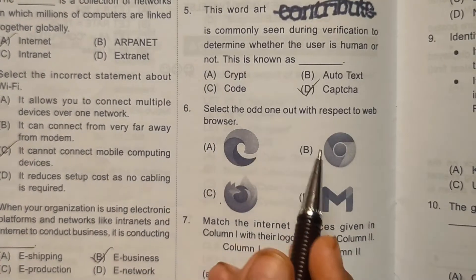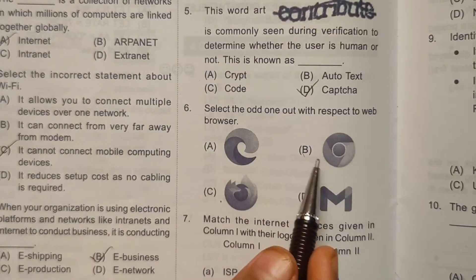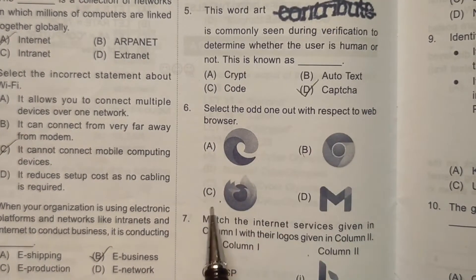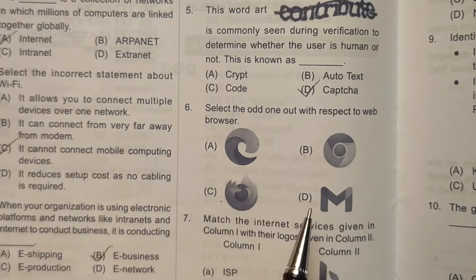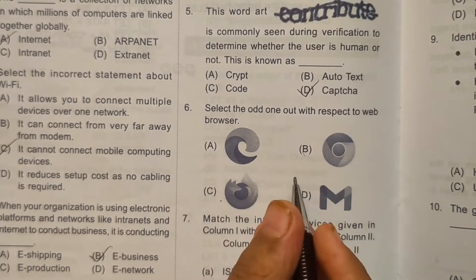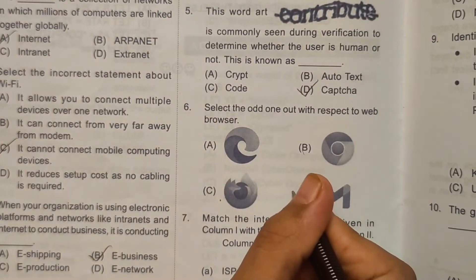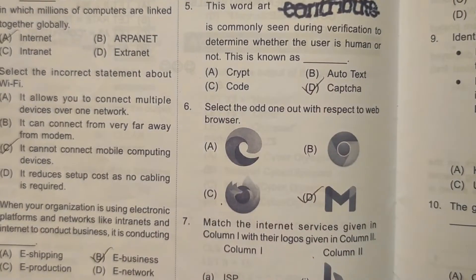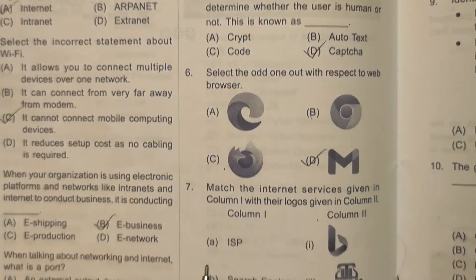Sixth question: Select the odd one out with respect to web browsers. Options: A) Microsoft, B) Chrome, C) Firefox, or D) Gmail. Microsoft, Chrome, and Firefox are all web browsers, so the correct answer is Gmail — option D — as it is not a web browser.